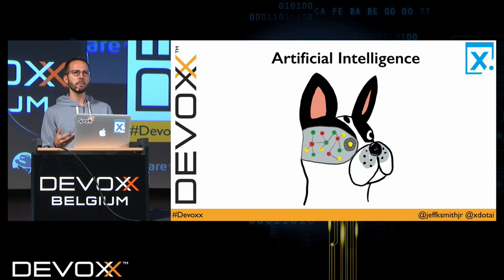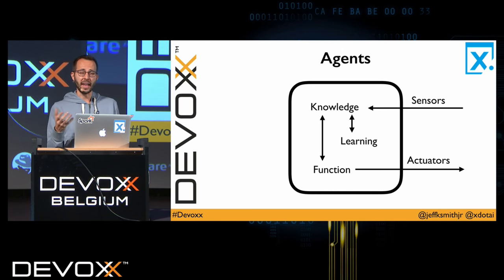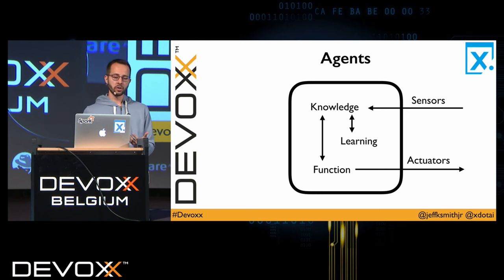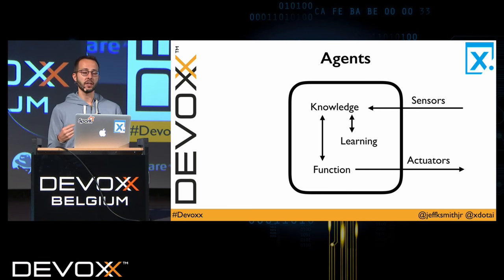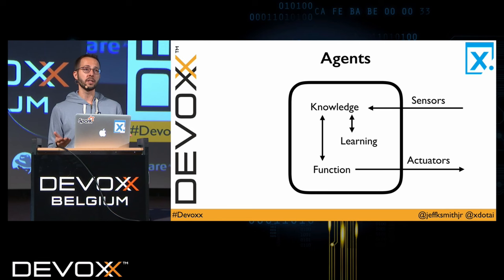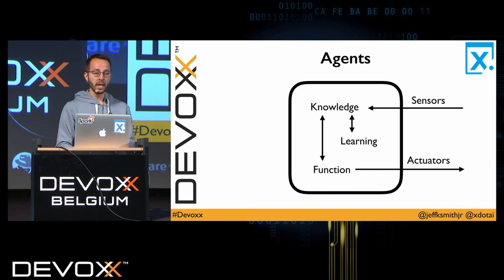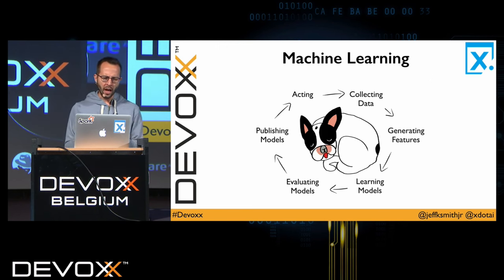One model used to describe artificial intelligence is the agent model. An agent is a thing which can sense and act upon some environment — it has knowledge and can learn from experiences, receiving percepts from its sensors, recording those in a knowledge base, and then making decisions. That function is sometimes called the agent function. Within machine learning, we're concerned with a small subset of AI — specifically the learning process whereby we receive percepts and reason about them to improve our knowledge.